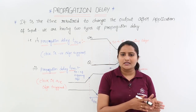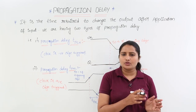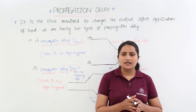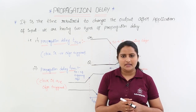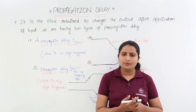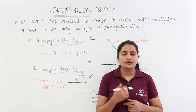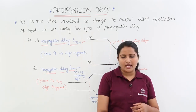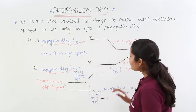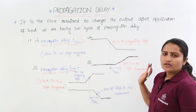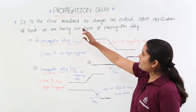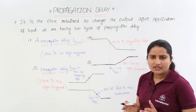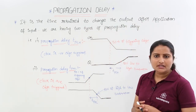If the response is changing from low to high, we calculate propagation delay low to high. And if the response is changing from high to low, we calculate propagation delay high to low. The propagation delay in a sequential circuit is defined as the time required to change the output after application of input.